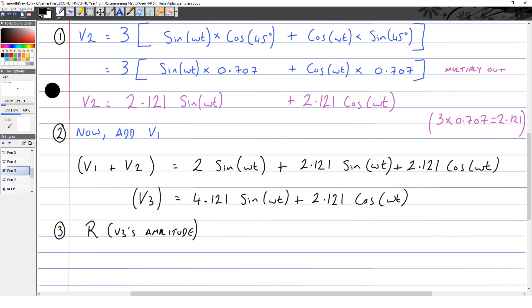So R, which is V3's amplitude, we work out by the square root of the sine coefficient squared added to the cosine coefficient squared. So R will come out at 4.635, that's its amplitude of voltage 3.